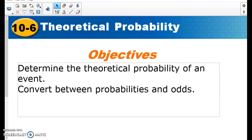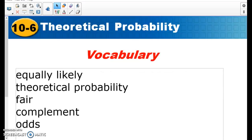Hello, this is Mr. Mohler for lesson 10-6, Theoretical Probability. In this lesson we're going to determine the theoretical and experimental probability and convert between probability and odds, which could be a little tricky because of how probability and odds are normally written.